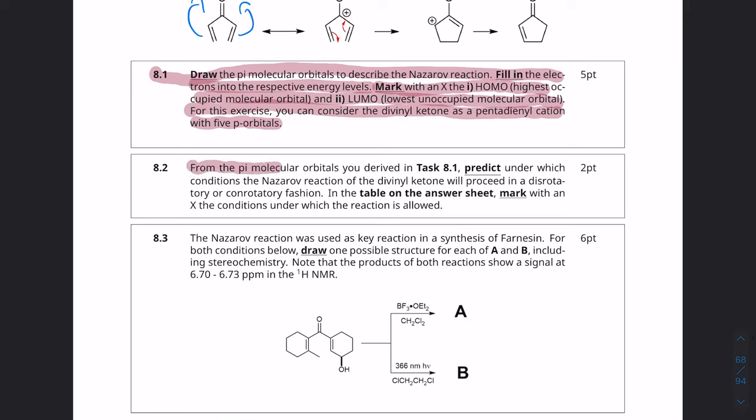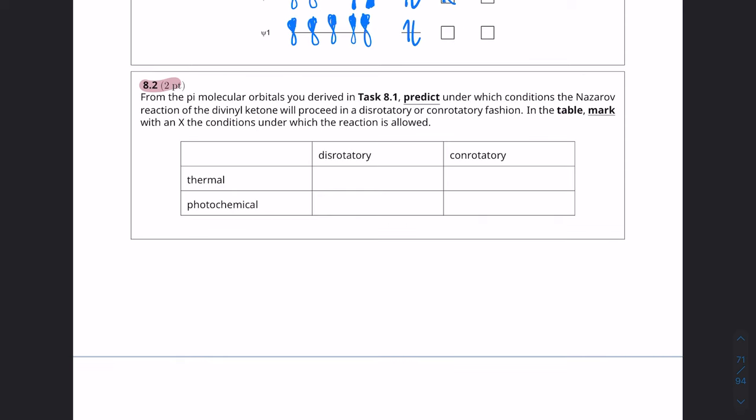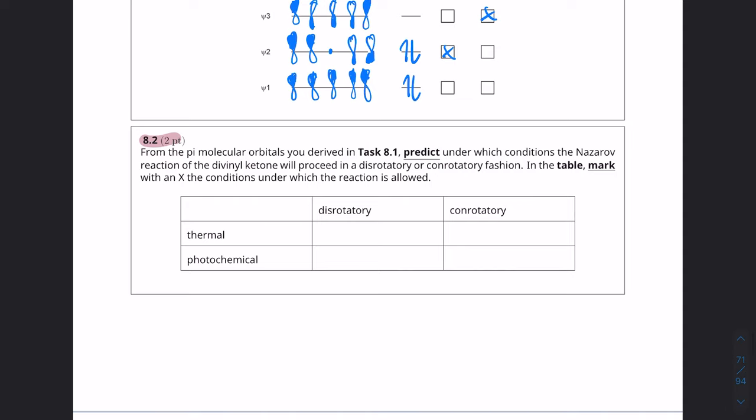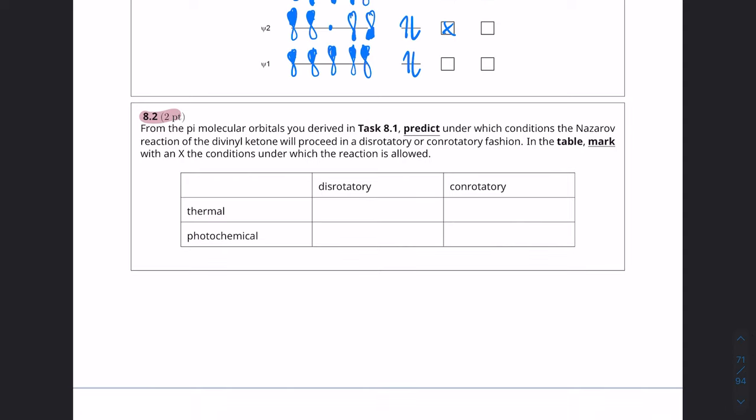From the pi molecular orbitals you derived in task 8.1, predict under which conditions the Nazarov reaction of the divinyl ketone will proceed in a disrotatory or a conrotatory fashion. In the table on the answer sheet, mark with an x the conditions under which the reaction is allowed. So this is basically asking for the Woodward-Hoffman rules of electrocyclizations.